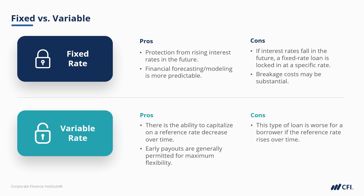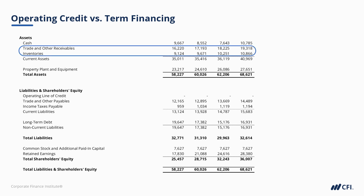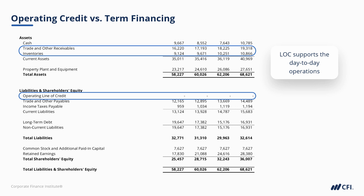When it comes to operating credit versus term financing, a skilled credit professional will always structure financing according to the nature of the underlying assets being financed. In general, current assets like inventory and accounts receivable will be financed using a current liability. When it comes to bank financing, we're typically talking about an operating line of credit — sometimes called a revolving line of credit, or a revolver. It's operating credit because it supports day-to-day operations and revolves more or less daily, depending on the changing balances of working capital accounts like receivables, inventory, and payables.